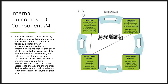Attitudes, knowledge, and skills ideally lead to an internal outcome that consists of flexibility, adaptability, an ethno-relative perspective, and empathy. These occur within the individual as a result of acquired attitudes, knowledge, and skills. At this point, individuals are able to see from others' perspectives and respond according to the way the other person desires to be treated, though individuals may reach this outcome in varying degrees.